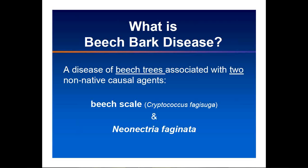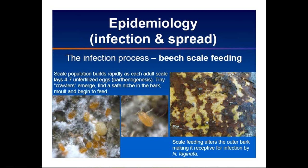How did this disease get here? It came into Halifax in 1890 on European beech horticultural plant material, and it's been spreading westward and southward ever since. Since arriving in Ontario, it's actually been doing quite a bit of damage — we first saw it around 1989.